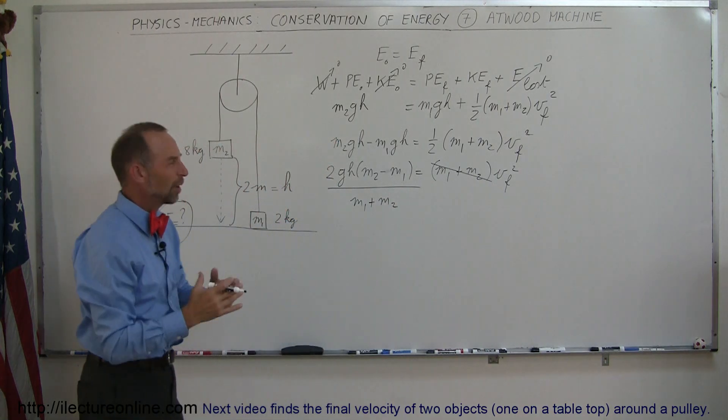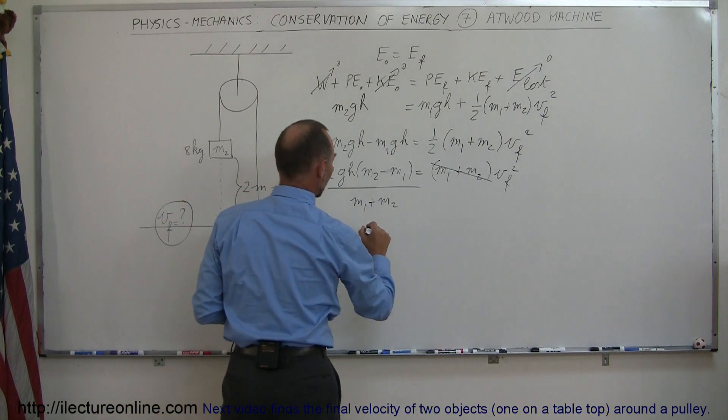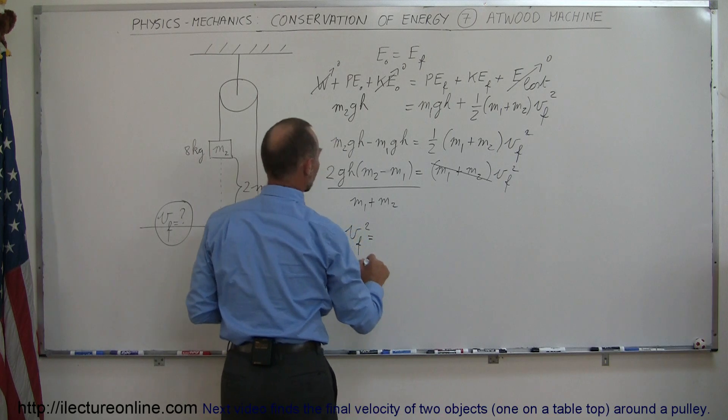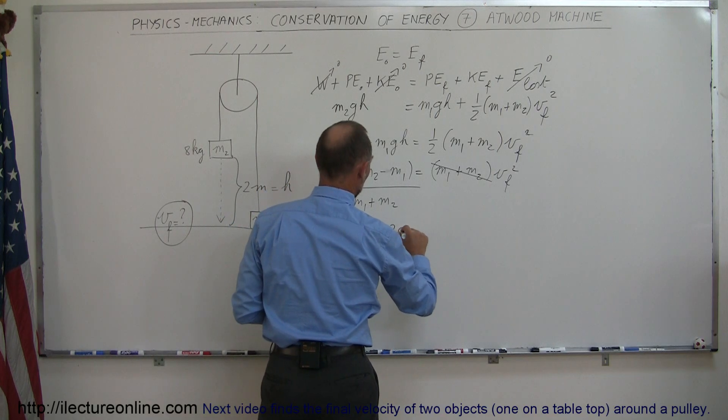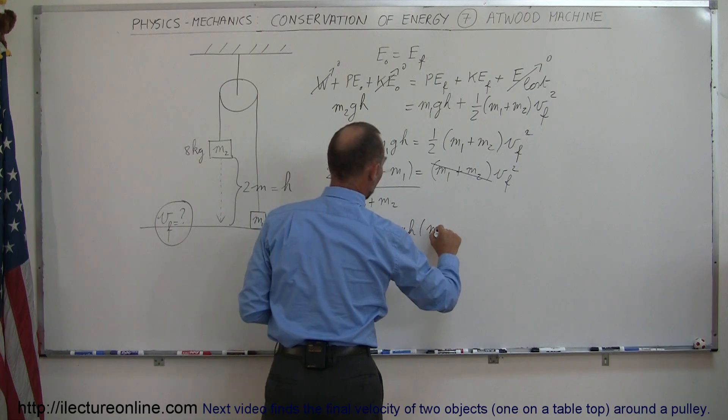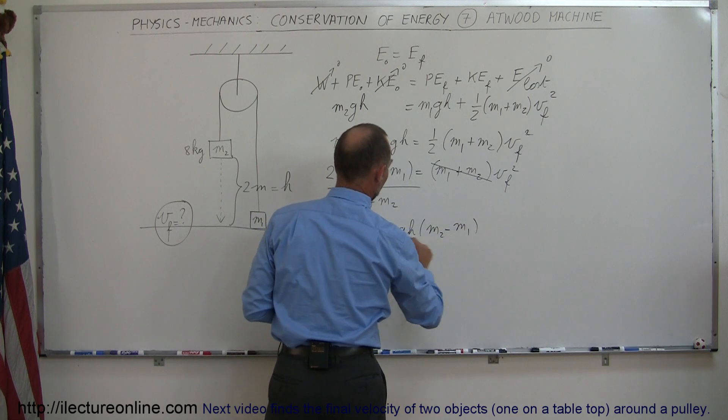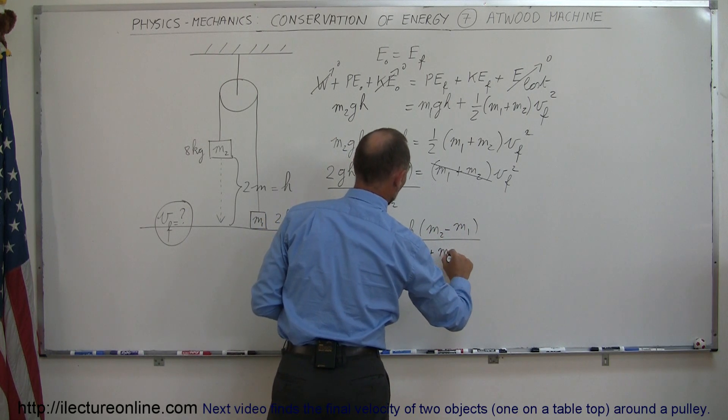And then finally we'll turn the equation around, makes it a little bit easier to look at, so we have V final squared is equal to 2GH times M2 minus M1 divided by M1 plus M2.